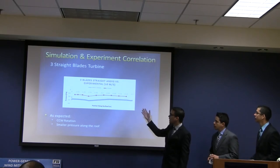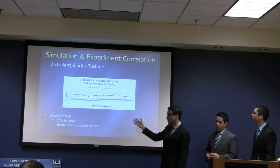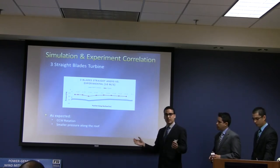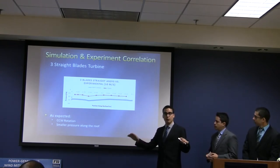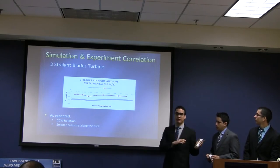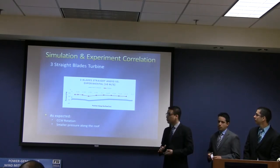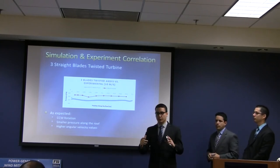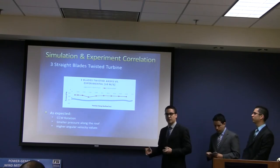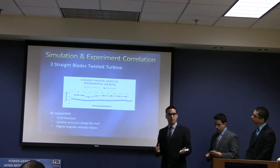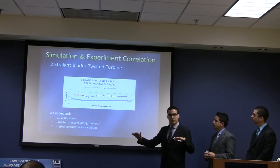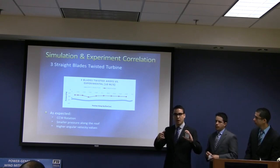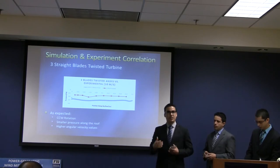This is the three straight-blade turbine. As expected, we got a counterclockwise rotation, and that counterclockwise rotation generates smaller pressure all along the roof — which is the opposite of the result we want. So we tried another configuration: a three straight-blade twisted turbine. We noticed a counterclockwise rotation and smaller pressure on the roof, but putting an angular twist on the turbine increases the angular speed.